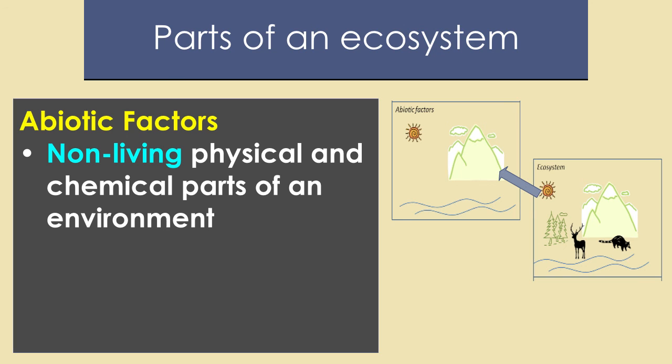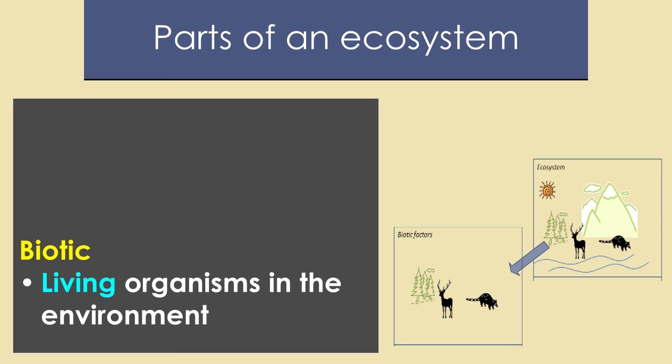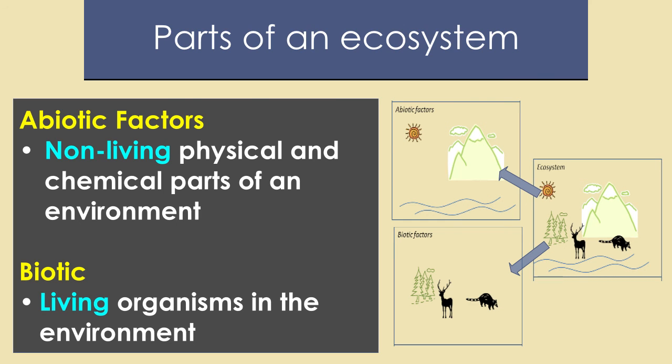The other side is the biotic parts of an ecosystem — the living organisms and living components. That would be plants, animals, bacteria, and fungi. So we have both aspects of an environment.